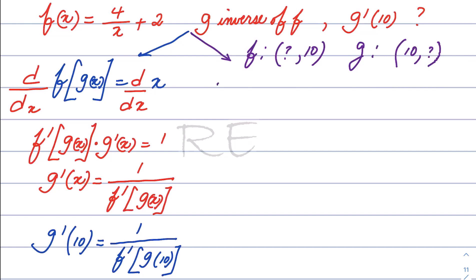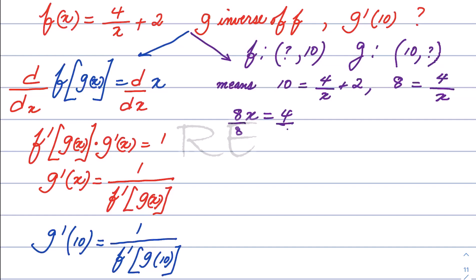Going back to the function, we will replace f of x by 10 in order to solve for x. 10 is equal to 4 over x plus 2. Subtracting 2 from both sides, 8 is equal to 4 over x. Cross multiplying, 8x equals 4, so x equals 4 over 8, which reduces to 1 half.